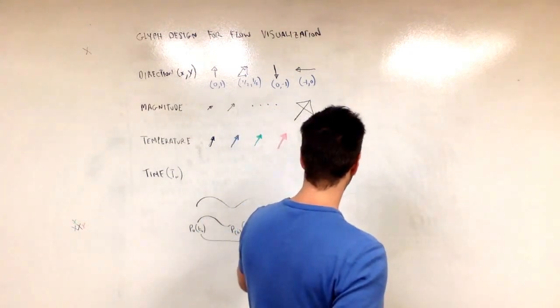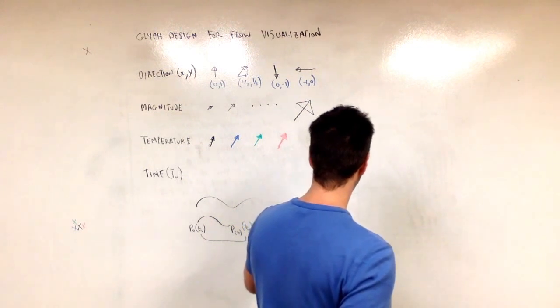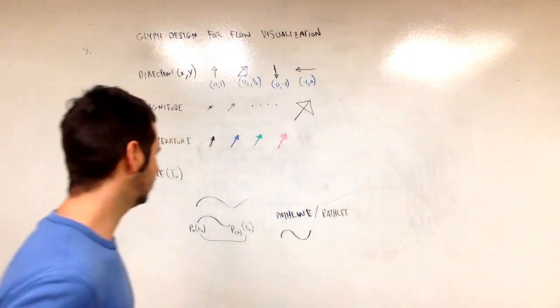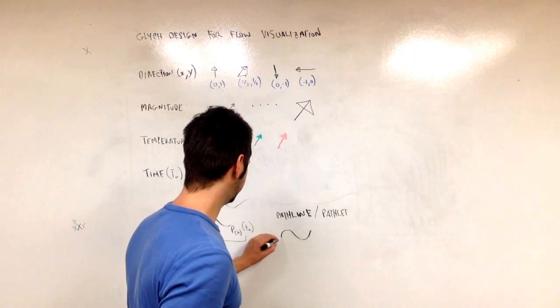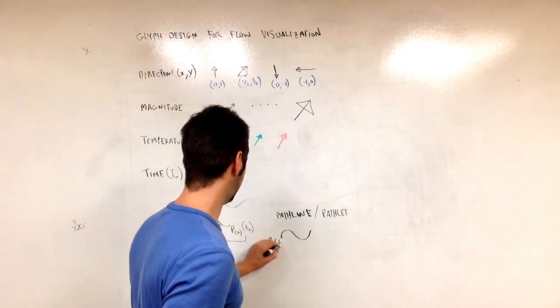A path line or a pathlet, which is a short curve. So we have a start position p naught, and it has a starting time of t naught.